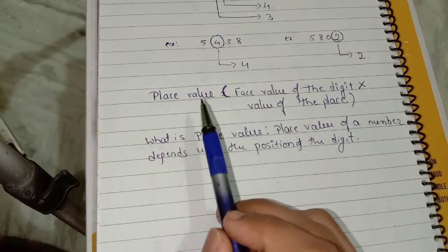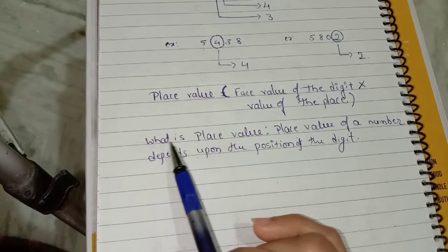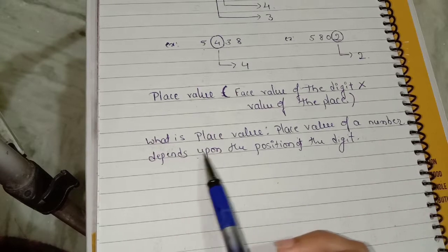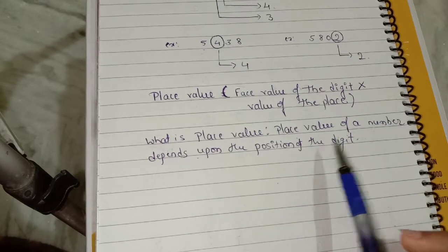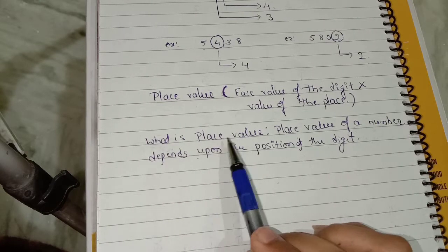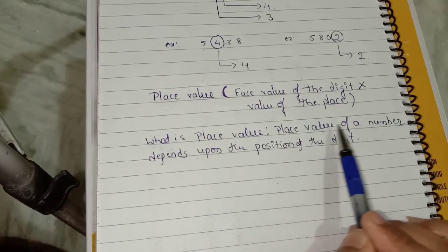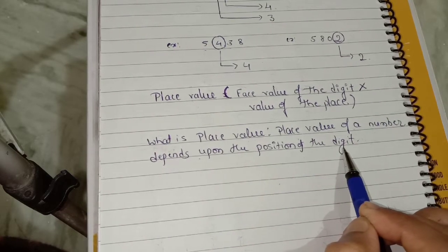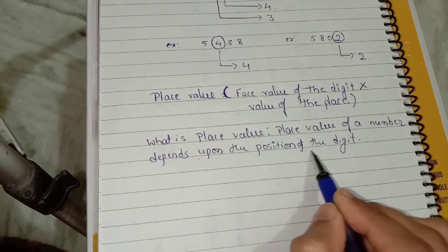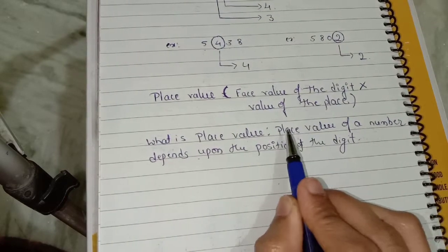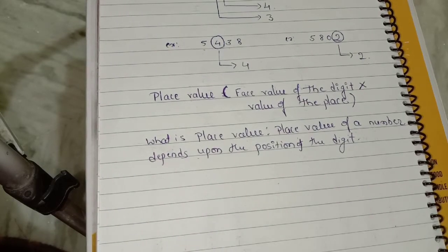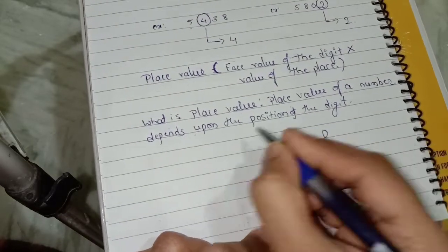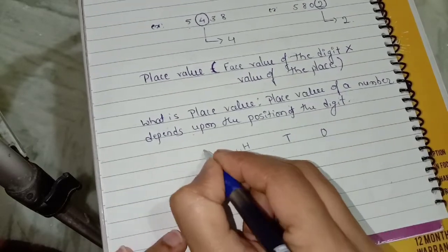Now, next comes place value. So, what is place value? Place value of a number depends upon the position of the digit. What is the position of the digit? We should know what the meaning of position is. Position means ones, tens, hundreds, and thousands — these are the positions of a digit.